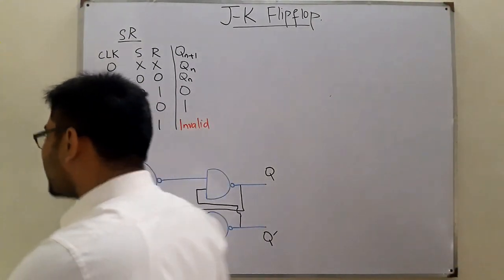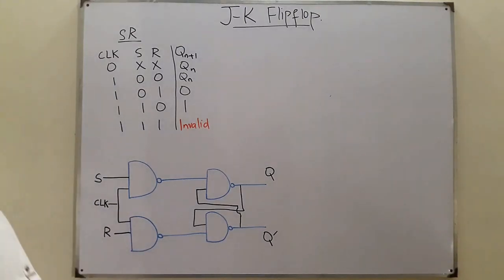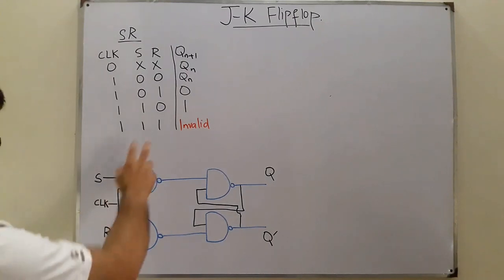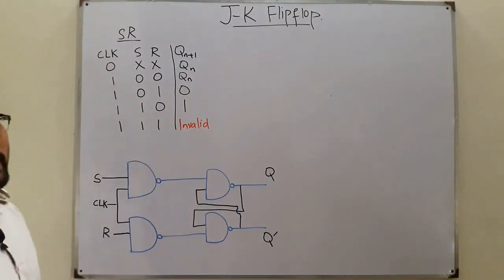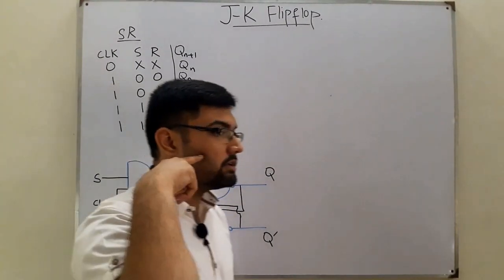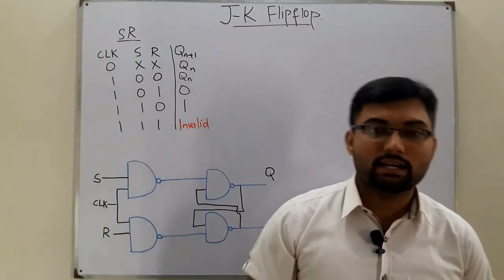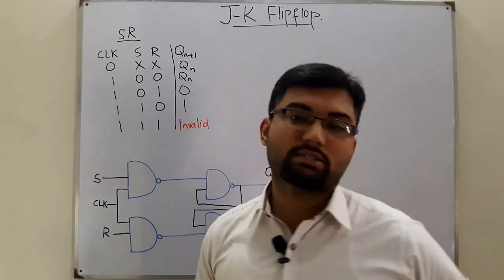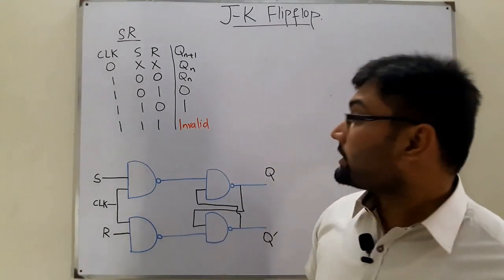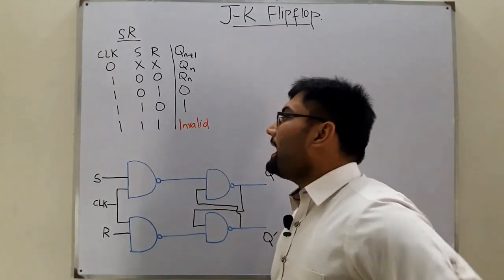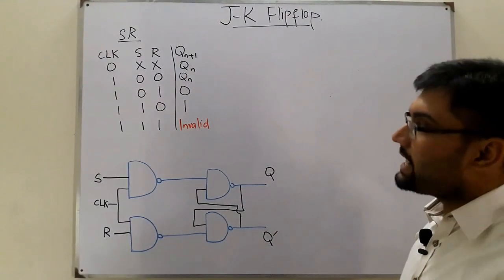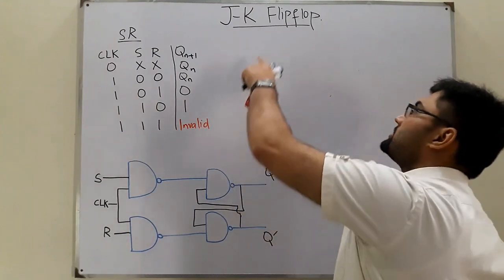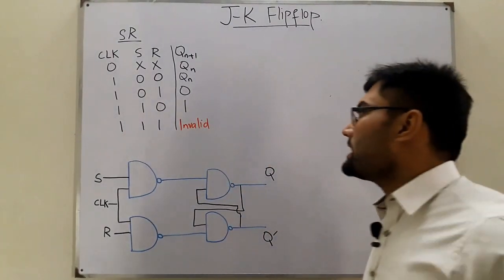Why are we studying the JK flip-flop? When we talk about the SR flip-flop, when both inputs are one, you cannot determine the next state — sometimes it gives zero, sometimes one, as we've seen in the detailed discussion of the SR flip-flop. We want to overcome this invalid condition, so we introduce the JK flip-flop.